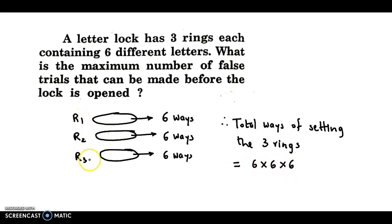Because the three rings set is compulsory. So by fundamental principle of multiplication, total ways will come to 216.